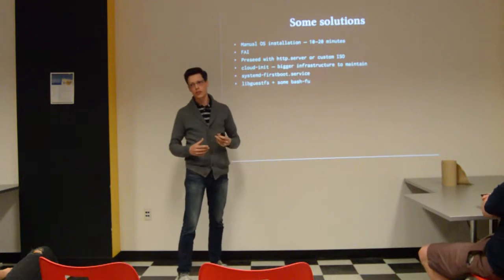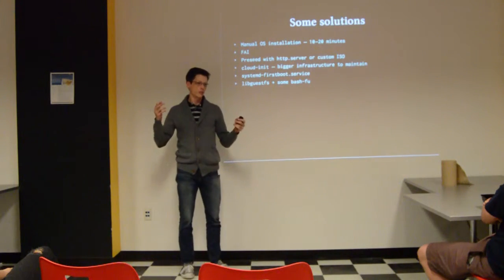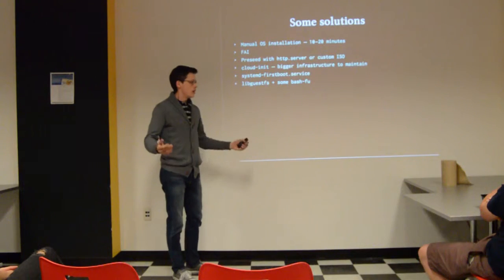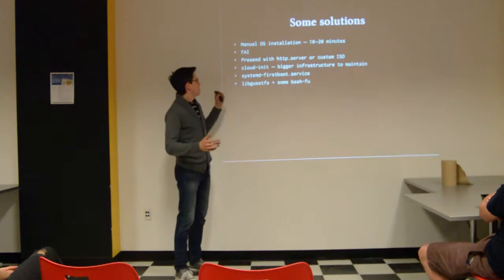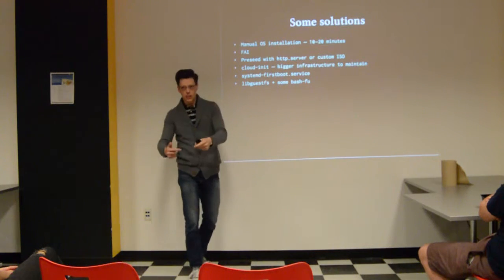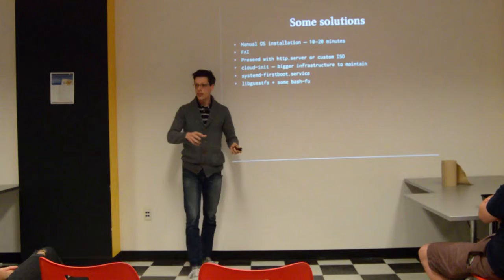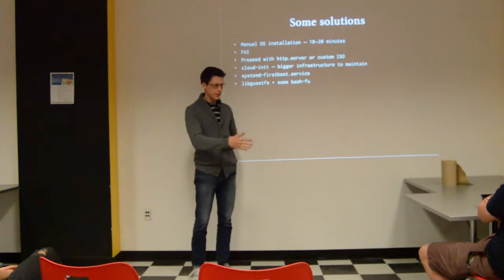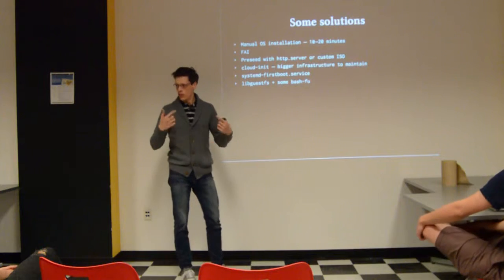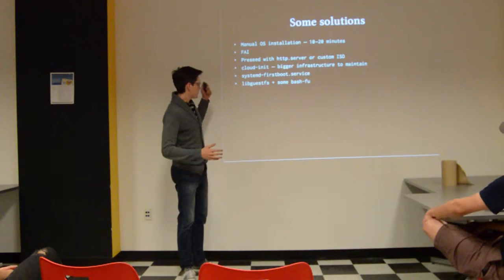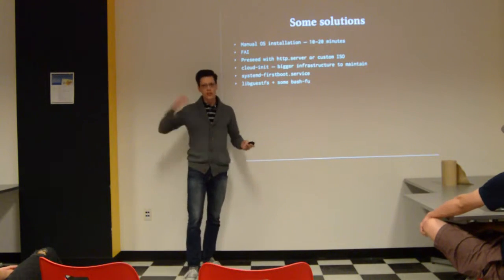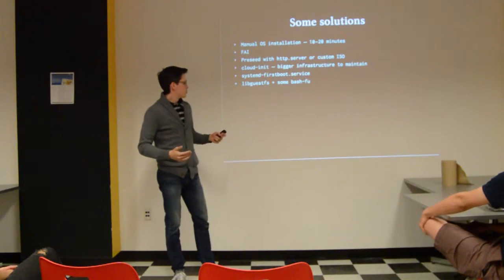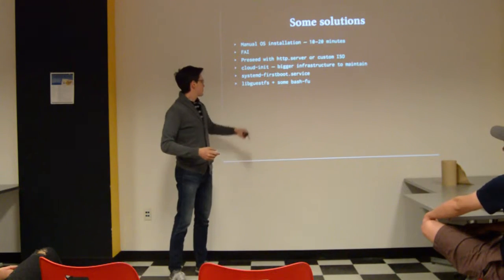Some of the solutions that exist: of course in OpenStack you can make an image with cloud-init in it, but it requires some infrastructure so it's not really practical. Also, manually installing is out of the question. I have tried preseding the installer questions for the Debian installer. It works well, but even if you know the questions by heart or if you preseed them, it still takes 10 to 20 minutes to go through the whole installation process. Systemd has a first boot service, but only in the bleeding edge versions, not in Jessie stable for instance, so that doesn't really work because I want to work with Debian right now.